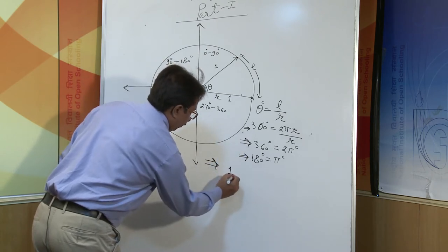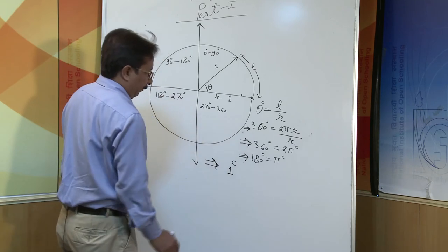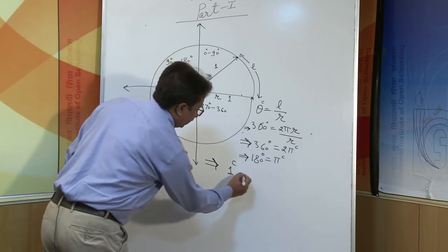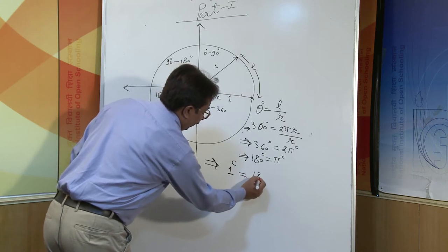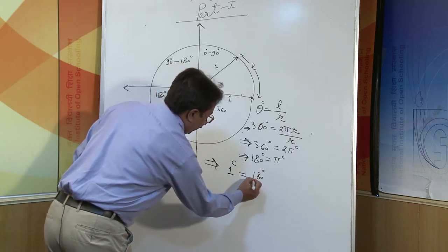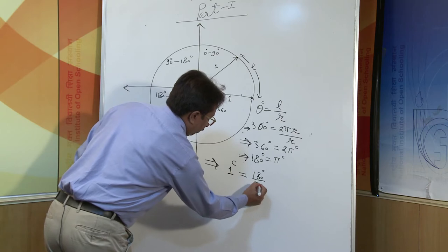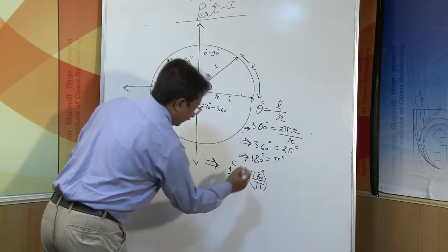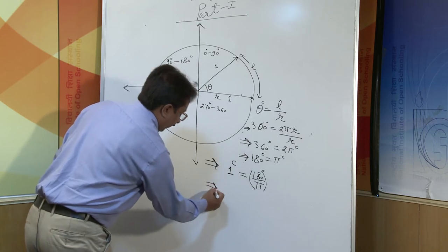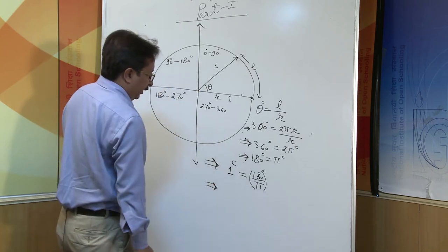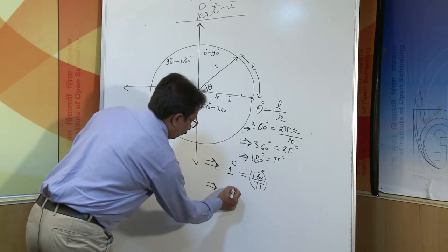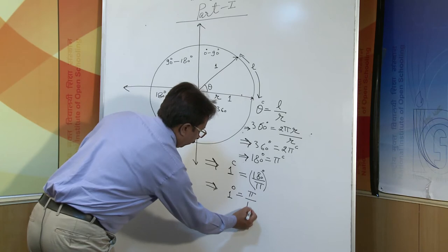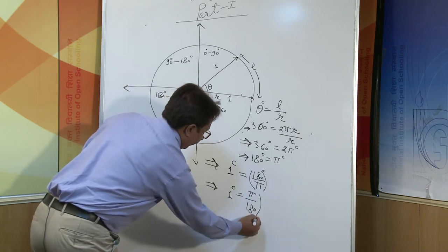From this relationship we can derive conversion formulas. One radian equals one-eighty divided by π degrees, and conversely one degree equals π upon one-eighty radians.